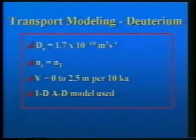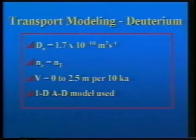These are our measured data, the top two sets of parameters. The effective diffusion coefficient for deuterium for both materials was 1.7 times 10 to the minus 10 meters squared per second.